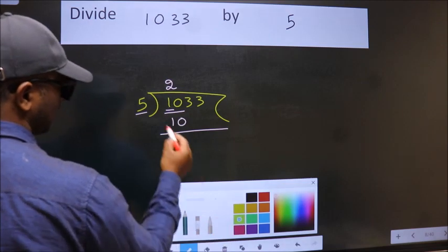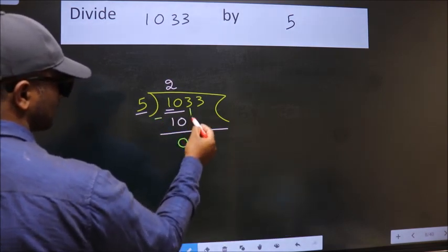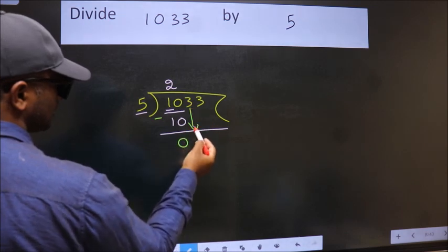Now we should subtract. We get 0. After this, bring down the beside number, so 3 down.